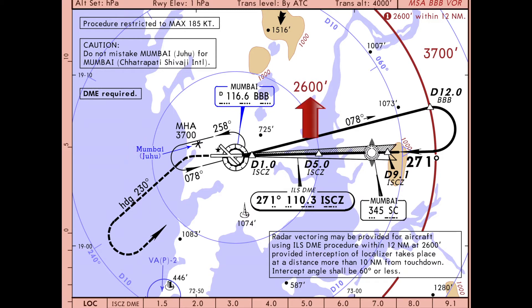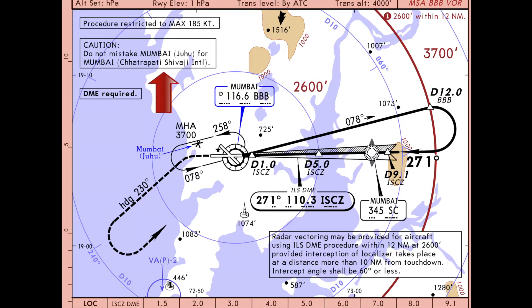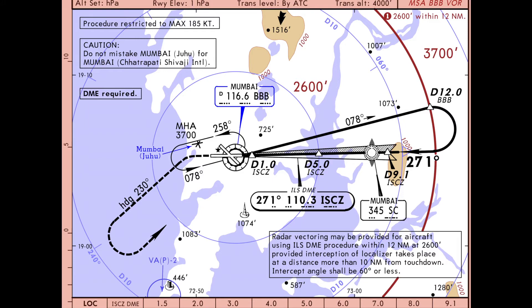You can see the various sector altitudes discussed before. The black arrow always represents the highest obstacle in the chart — in this case at 1,516 feet. In the boxes you can read some important information, such as a caution not to mistake another airport with similar runway alignment, and a note that a DME is required for this approach. You can also see a prohibited area, denoted by the identification VAP2. The VA is the code of the FIR, P stands for prohibited, and 2 is the identification number. Similarly, restricted areas in this FIR will be identified as VAR, and danger areas as VAD.